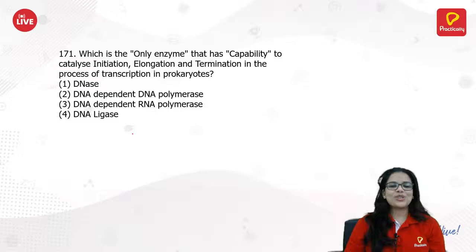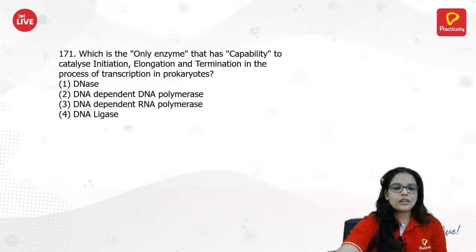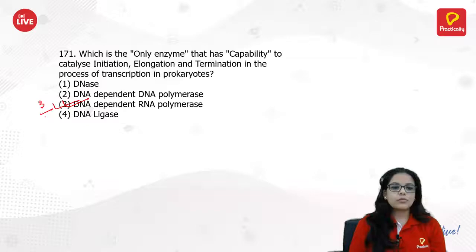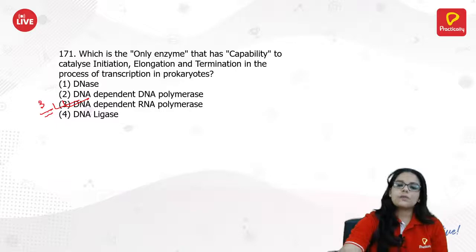Which is the only enzyme that has the capability to catalyze initiation, elongation, and termination of the transcription process in prokaryotes? It is DNA-dependent RNA polymerase. Always remember: in transcription it will be RNA polymerase because it gives rise to RNA.